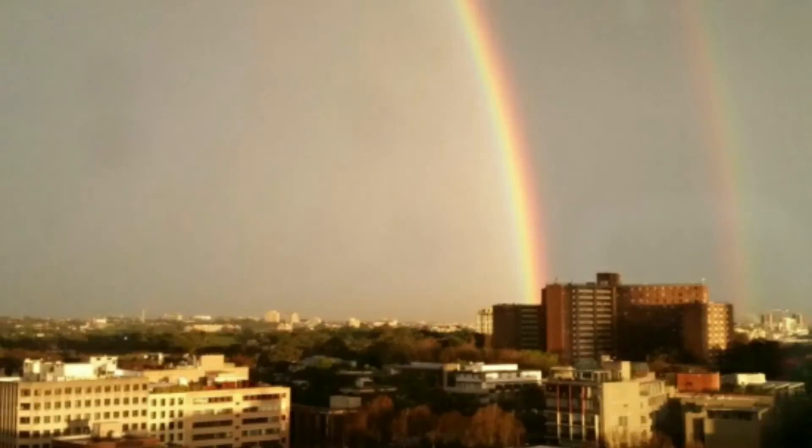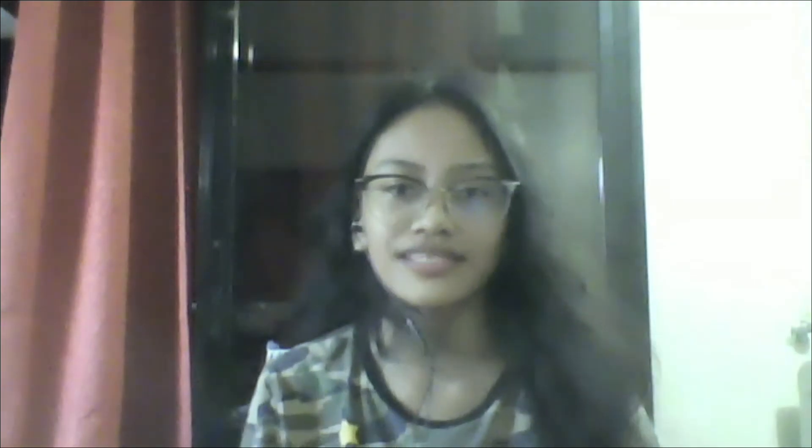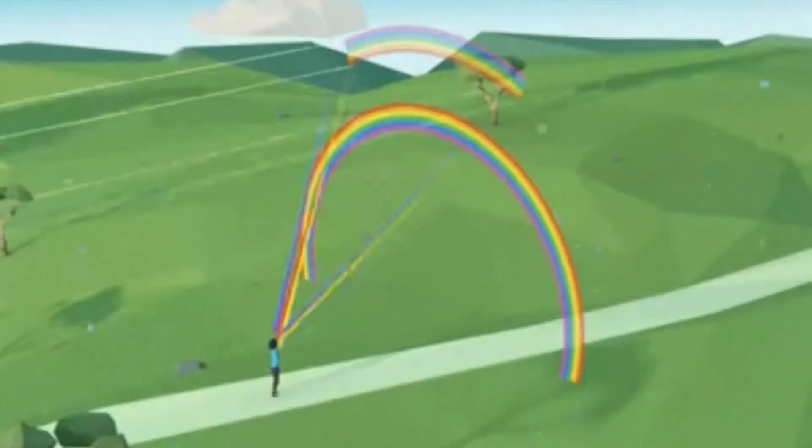Secondary or double rainbows form when light travels through the bottom of the raindrop and reflects off inside the raindrop one more time than with primary rainbows. This means that the secondary rainbow appears outside the primary rainbow.